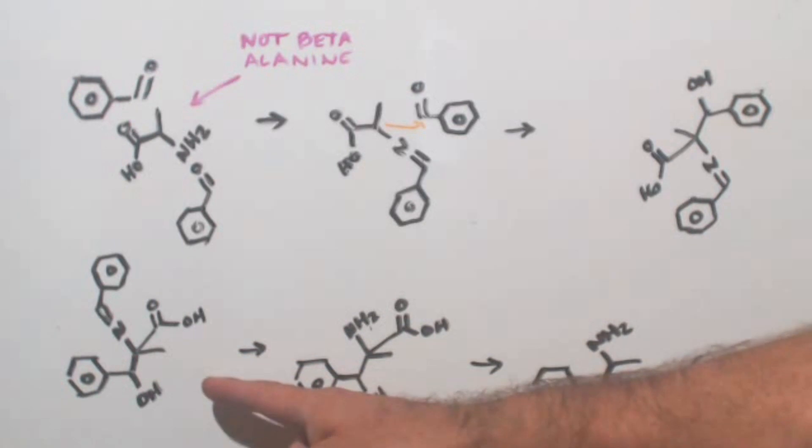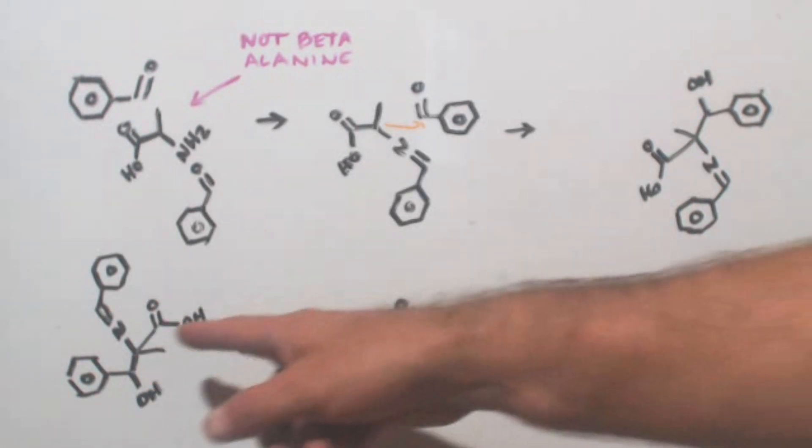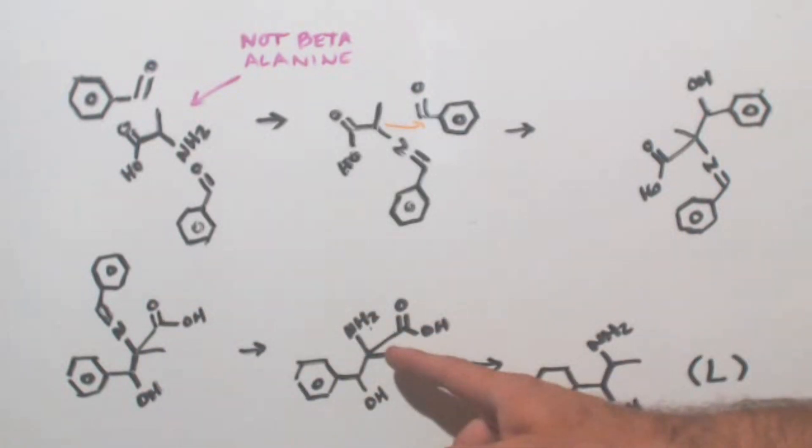Now after that, the imine pops off and becomes an amine, so now you're really getting close to your end product. This decarboxylates and comes off as CO2, and now you're left with this.